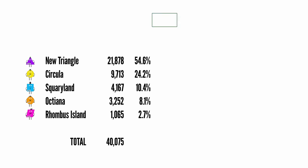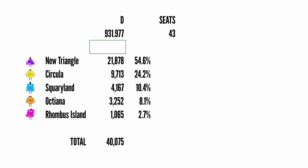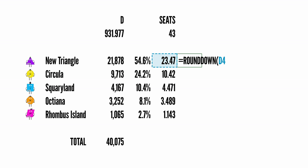The House of Reps for these shapes will get 43 seats divided up between all of them. I'm going to use something called a divisor D — the number of people represented per seat — which equals the total population divided by the number of seats available. So each seat has 93.2 people represented by it. Over here, I'm putting in New Triangle's population divided by the number of people per seat to calculate the number of seats, then dragging that down to see what each state gets. New Triangle gets almost 23.5, Circular is getting 10.42, and so on.